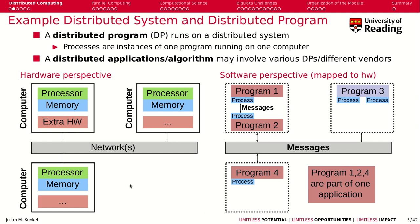Now we want to run a distributed program on this system — the software perspective, which is mapped to the hardware. We may have program one and program two running on the exact same computer, communicating with each other by exchanging messages. Physically, they are represented by operating system processes. They have their own isolated memory — access is isolated from another process. So they exchange messages, and program four runs on a totally different computer with its own process.